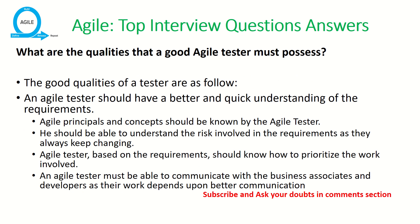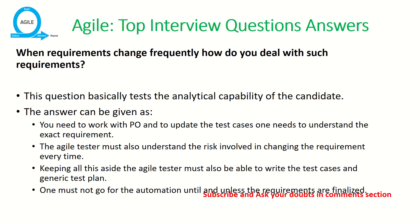The next question is: what are the qualities a good agile tester must possess? This applies to both development and QA teams. A good agile tester should have a quick and thorough understanding of requirements. The concepts of how agile teams work should be clear. They should know how to prioritize work, foresee risks involved, and articulate how to mitigate those risks. Strong communication is very important for any agile developer or tester.